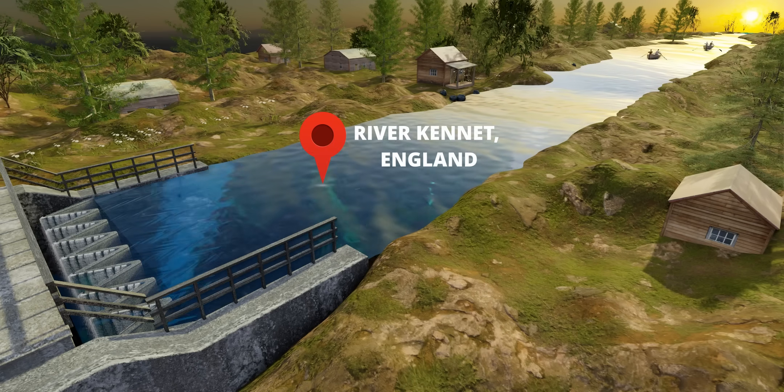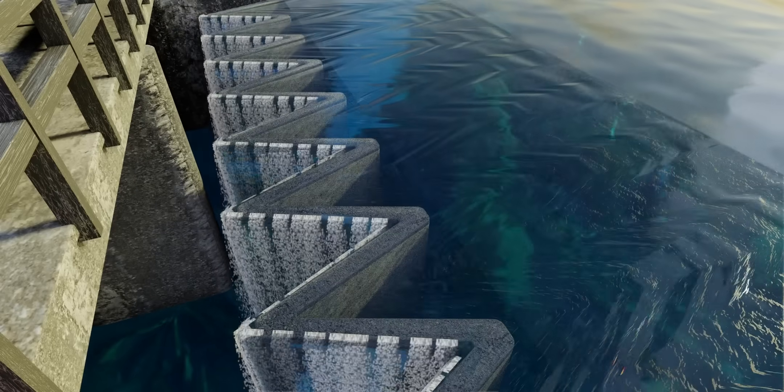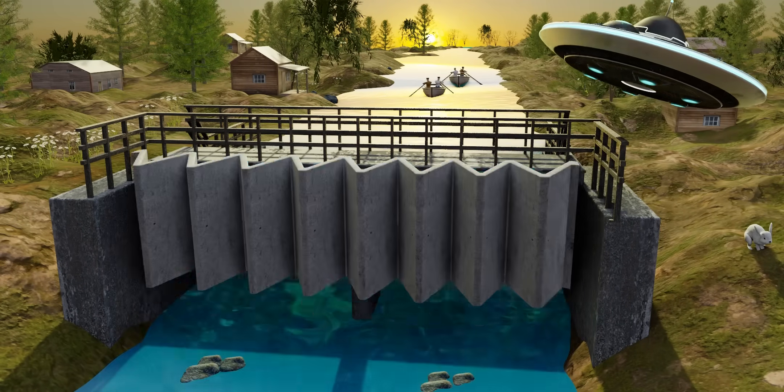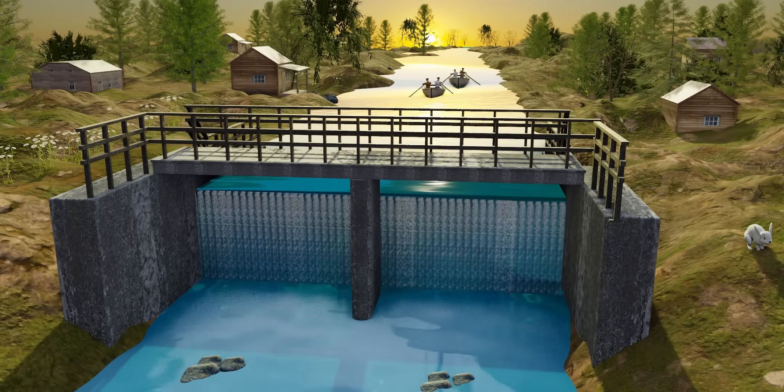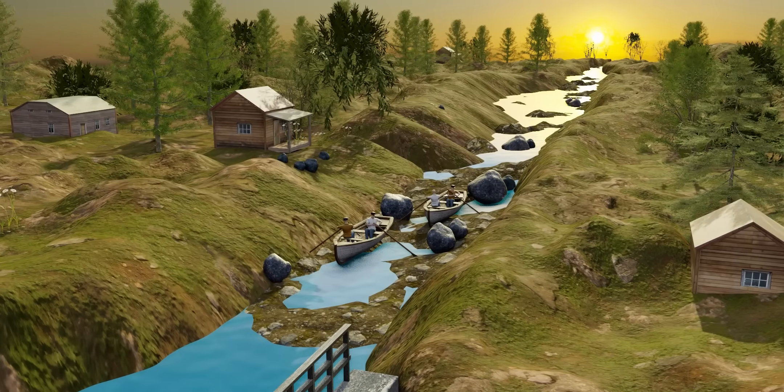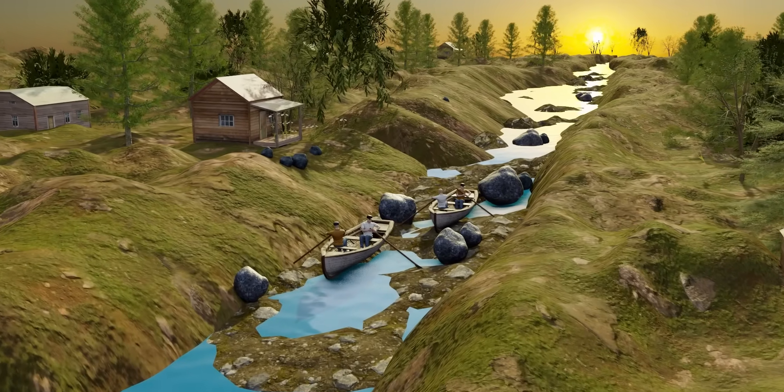If you've ever visited the beautiful Kennet River, you might have noticed a strange-looking zigzag structure. Did you know that if this structure were to disappear one fine morning, the result would be disaster? Welcome to the interesting engineering behind weirs.